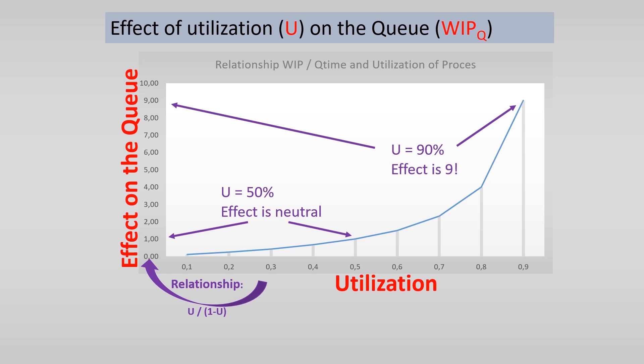Because of variation, the queue and waiting times are massively amplified. And if you have a utilization near 100%, the queue will be so large that the waiting times for an average order is almost infinite.